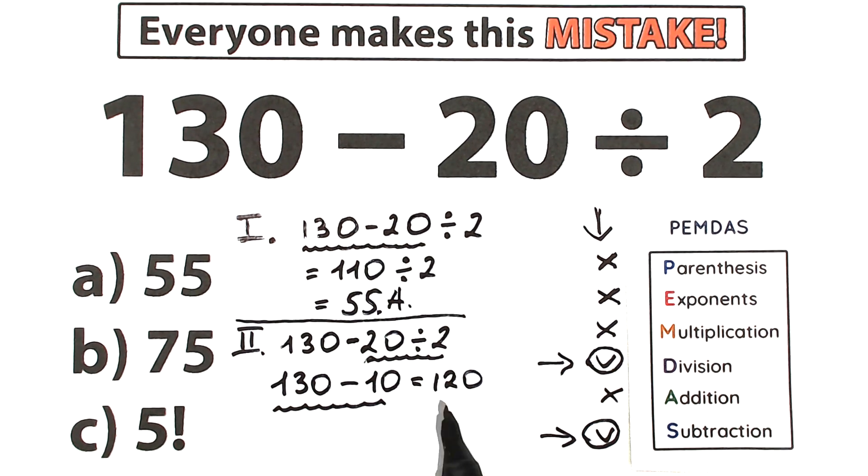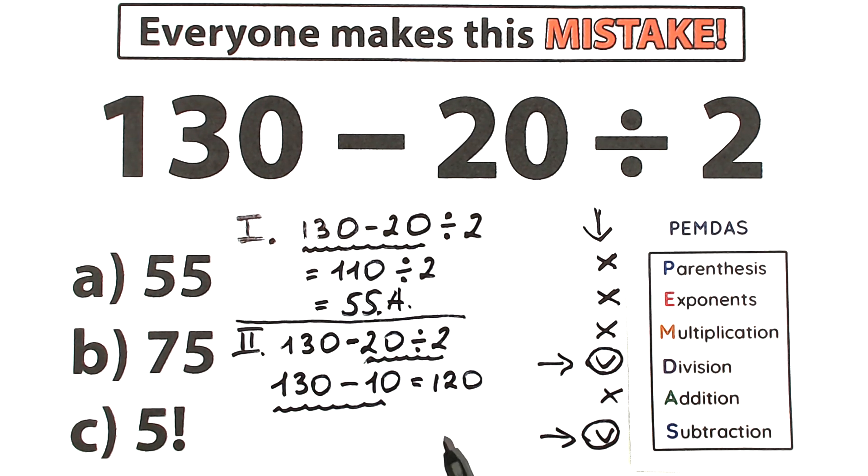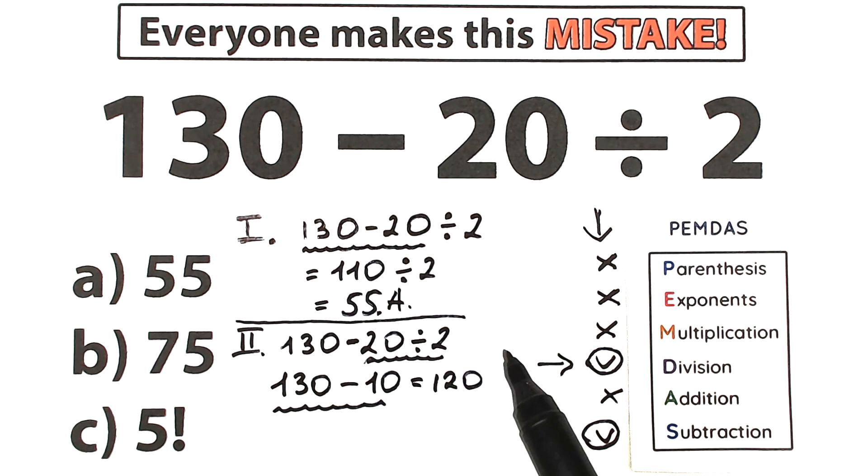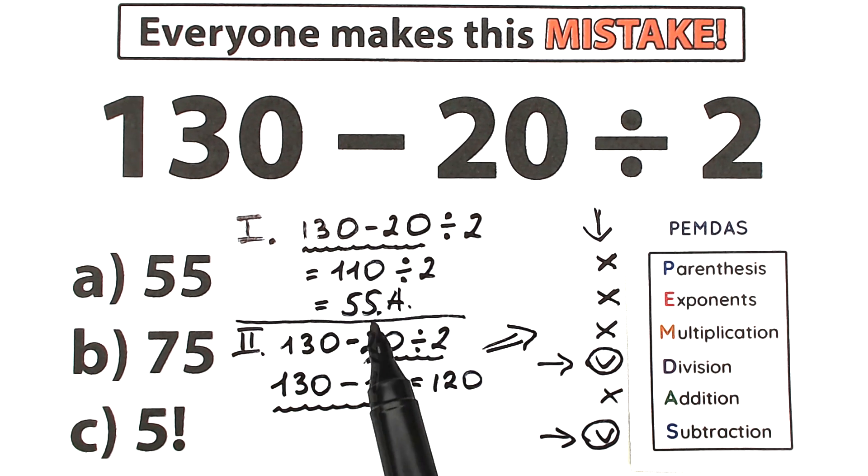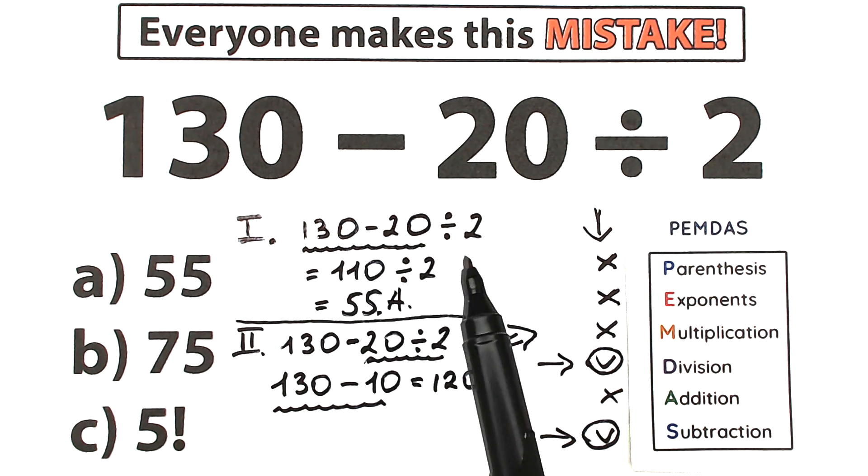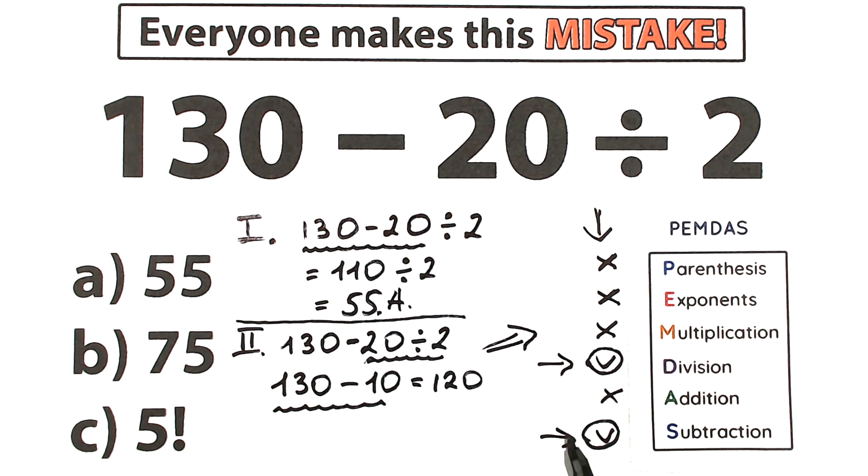And what is the correct answer? 120 or 55? Of course, correct answer is 120. You ask me why? Of course, because we solve it according to a correct order of operation. In our case, this is PEMDAS order of operation. This is absolutely wrong solution because we can't go with subtraction, then division. This is a very bad sign in terms of math because division is before subtraction, division is before addition, division is before subtraction all the time. So multiplication and division group is all the time before addition and subtraction group.